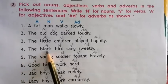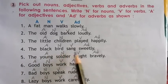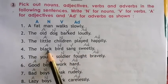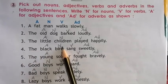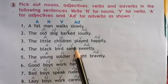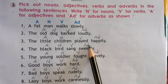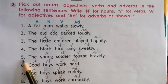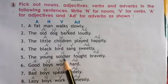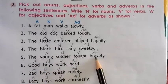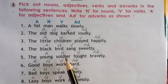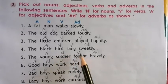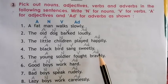4. The black bird sang sweetly. Black is adjective, bird is noun, sang is verb, sweetly is adverb. 5. The young soldier fought bravely. Young is adjective, soldier is noun, fought is verb, bravely is adverb.